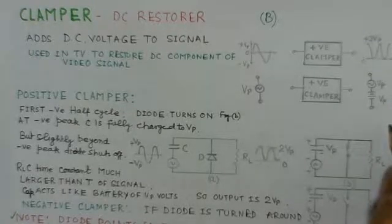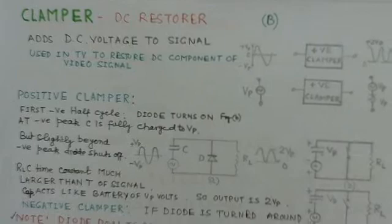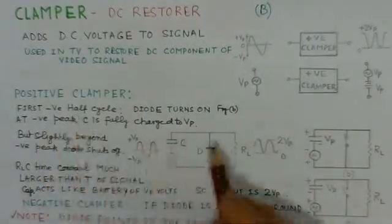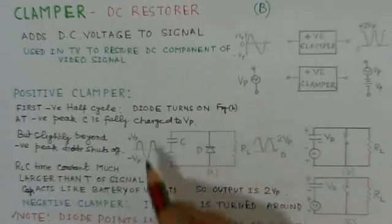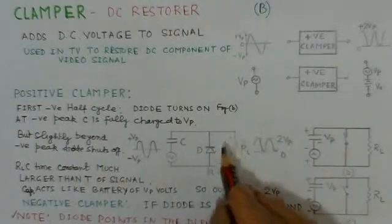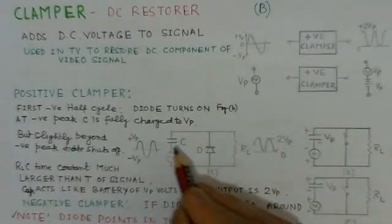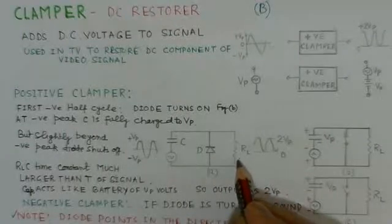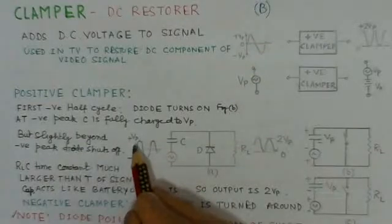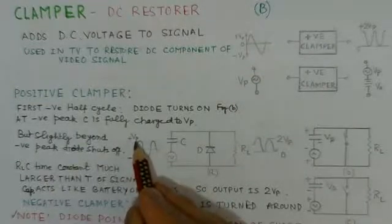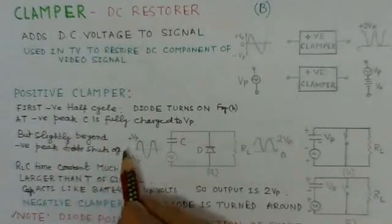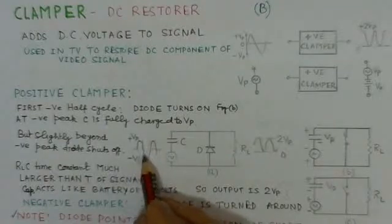Now we will see a circuit of a positive clamper. This positive clamper circuit consists of a capacitor, a diode, and a resistor RL. Now we will see that a sinusoidal signal is applied having a peak plus Vp and minus Vp.